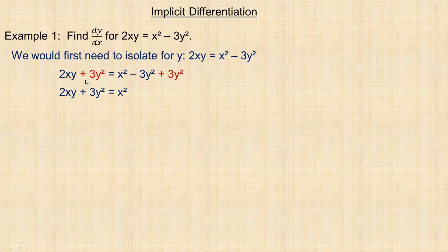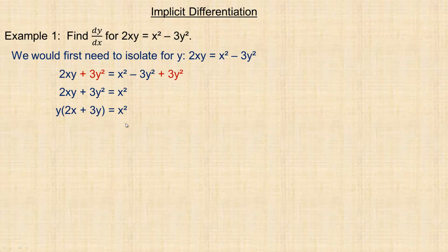What we're left with is 2xy plus 3y squared equals x squared. Now trying to still solve for y, I notice there's a common factor y in both, so I can factor y out. I'd have y times (2x plus 3y) in brackets. But then I might realize I can't get y alone, because dividing both sides by (2x plus 3y) still leaves a y on the right side, so I'd be writing y in terms of y — I haven't actually solved for y.